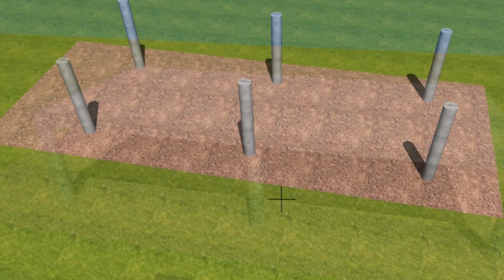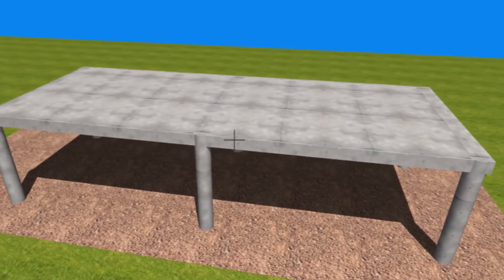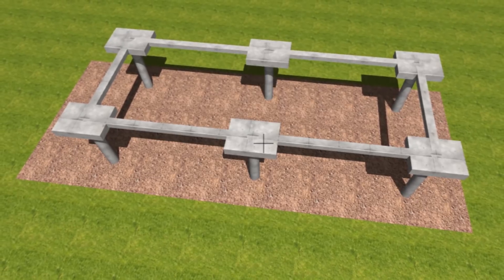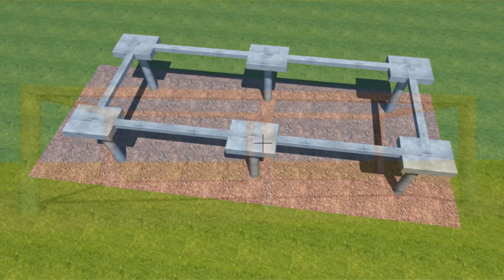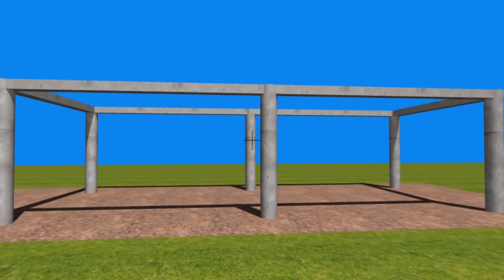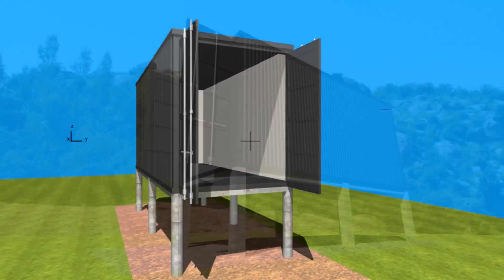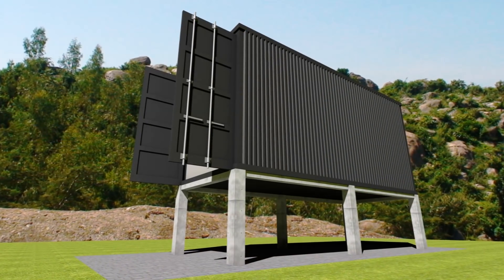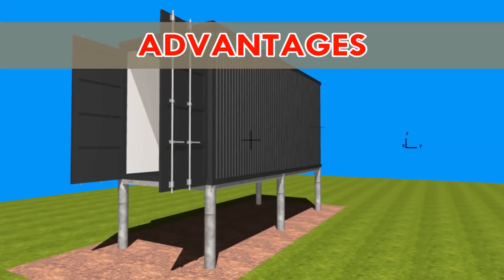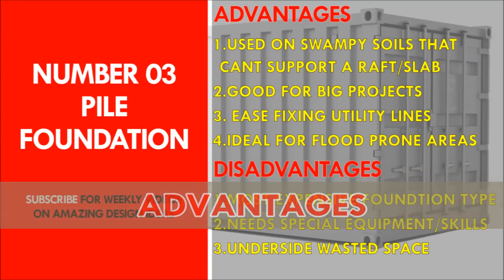Once you have secured all your piles in place, you need to cap the tops using either a concrete slab, concrete pads, or concrete beams to tie all the piles together so you have a rigid structure ready to receive your shipping containers. Once that is done, you can bring your containers and place them on top of the pile structure.